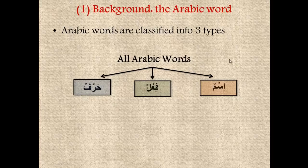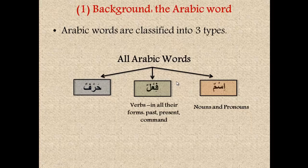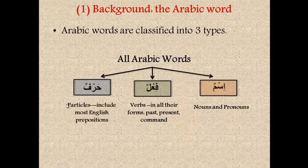An ism is a noun or a pronoun. So all nouns or pronouns fall under this category of ism. A fi'l is a verb. This includes verbs of all different conjugations and tenses, and also includes verbs that are in the interrogative or the command form. So basically any type of verb in Arabic, regardless of conjugation or tense, will fall under this category. And lastly we have the group harf. The best translation is a particle, even though this word is kind of obscure.